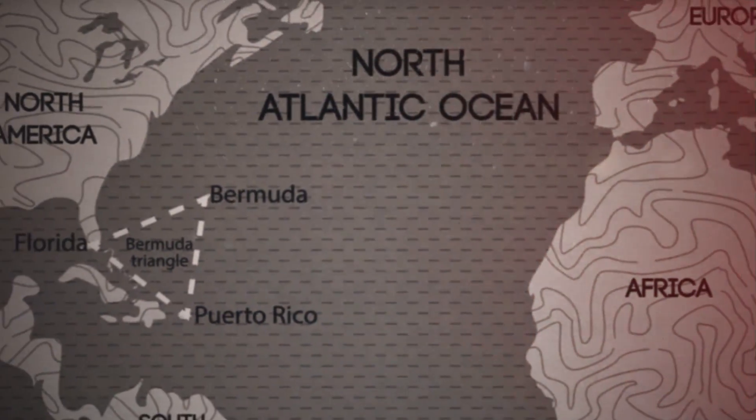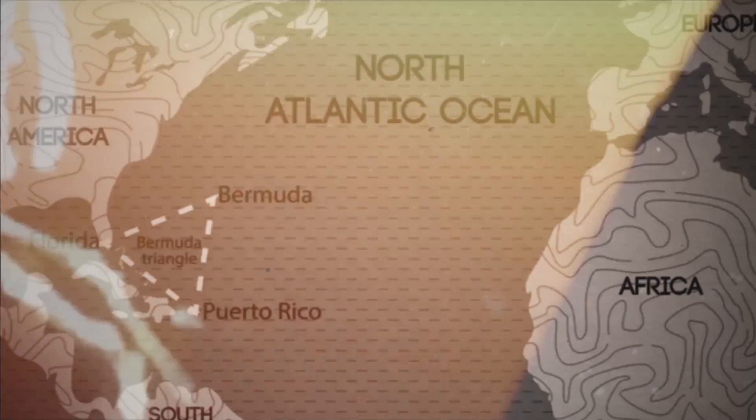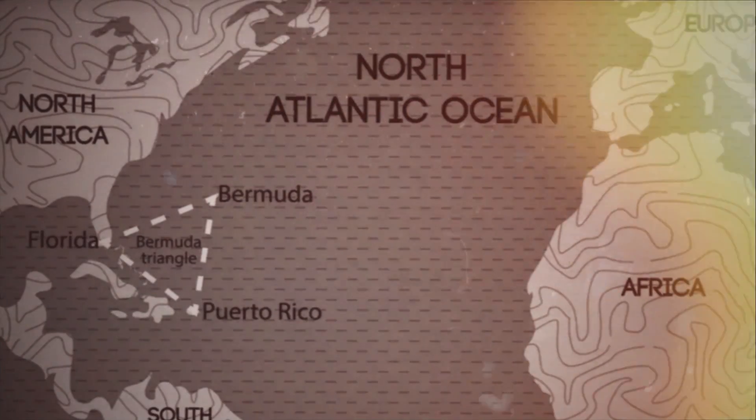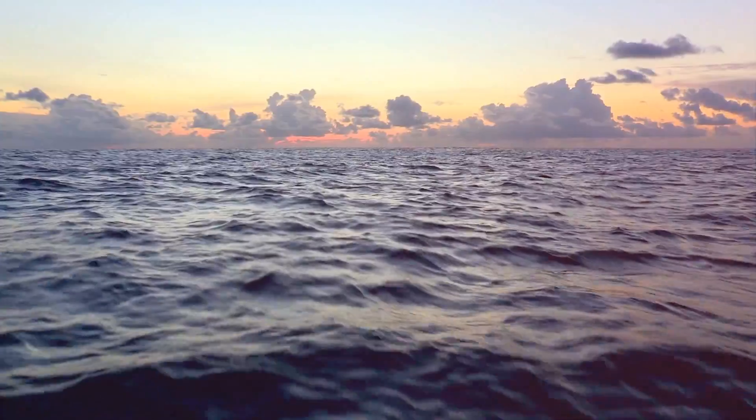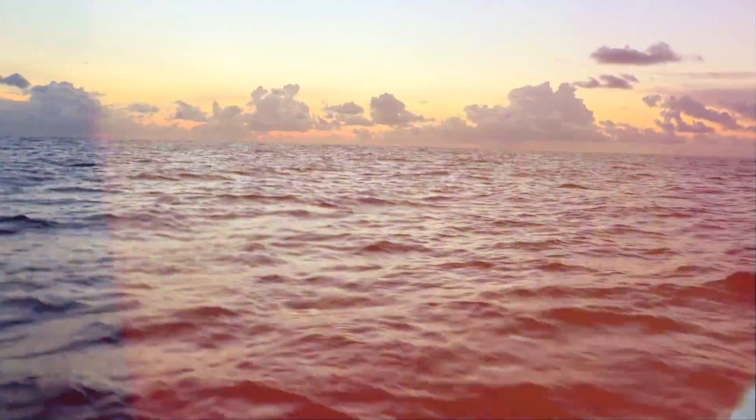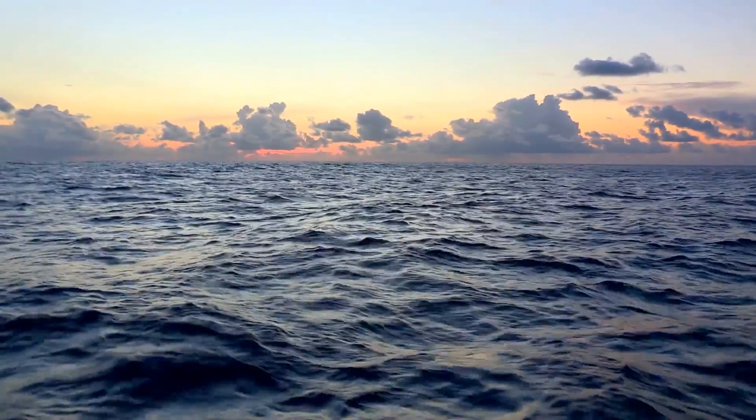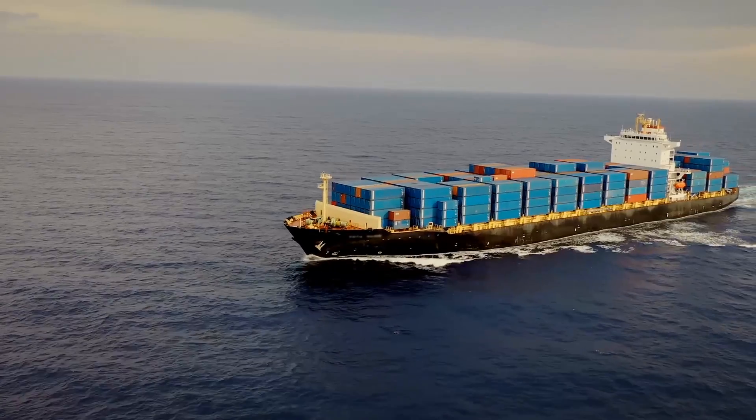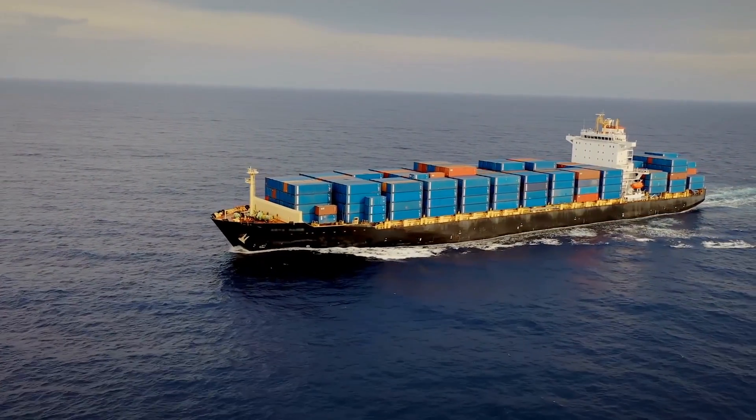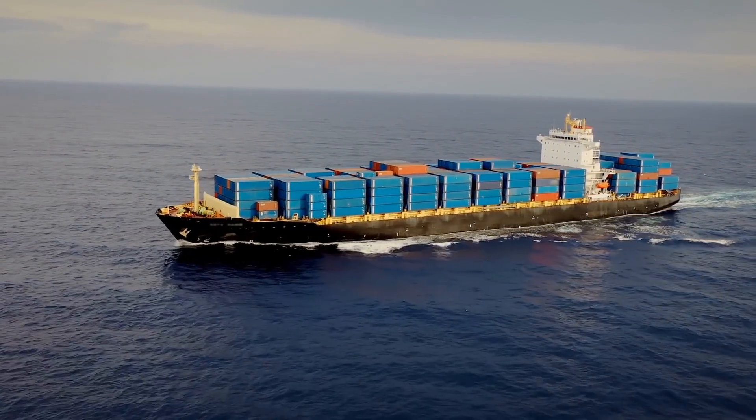The Bermuda Triangle extends from Miami to San Juan in Puerto Rico and the island of Bermuda. It covers hundreds of thousands of square miles in the North Atlantic Ocean, making it a massive expanse. Ships arriving and departing from the east coast and the Gulf of Mexico clog the region.